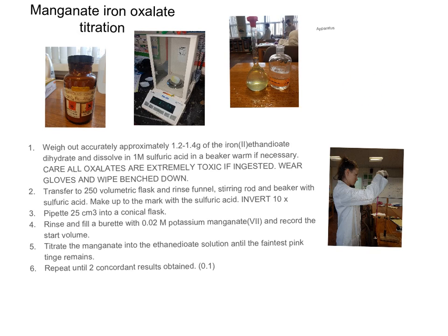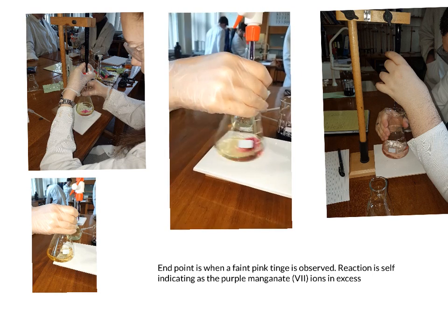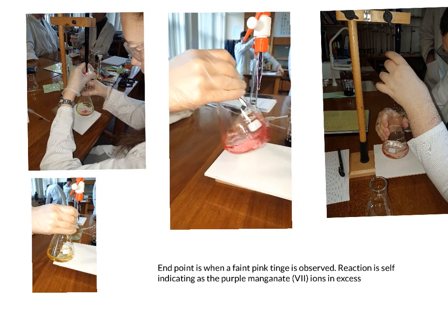And then carry out a titration. So we filled a burette up to the mark with 0.02 molar potassium manganate(VII) solution. You can see here that as the potassium manganate solution is being added to the oxalate iron, it gets reduced.